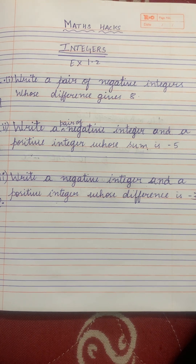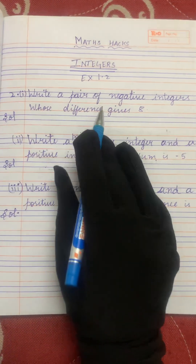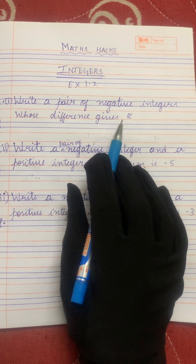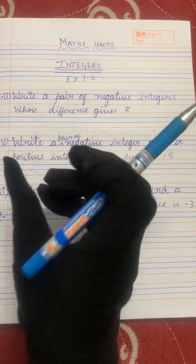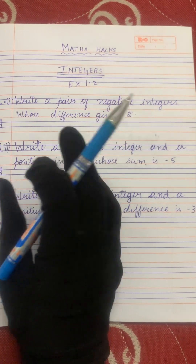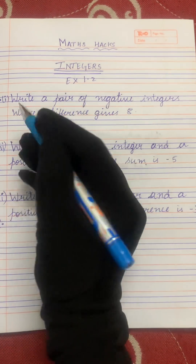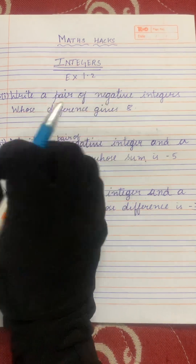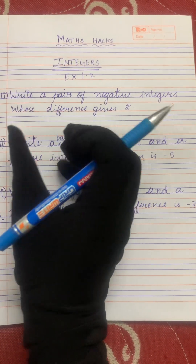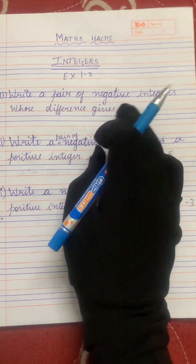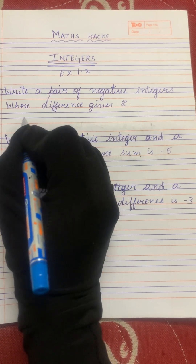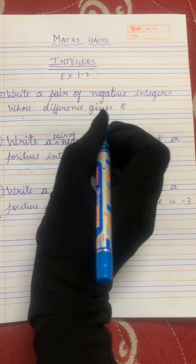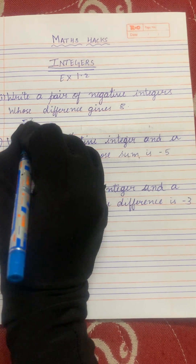Now let's solve the second sum. Write a pair of negative integers whose difference gives 8. We have to write a pair of negative integers. Negative integers are numbers which have a minus sign in them. So we have to write a pair of negative integers to get 8 as our answer. So let's take minus 2.